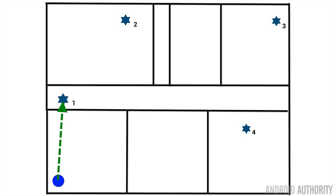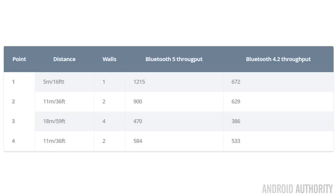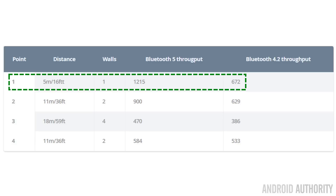As I moved the second board around the house, to point one — just through one wall about five meters away — the speeds did start to change. To compare, I also ran the same tests over the older stack. At point one, about five meters away (sixteen feet), Bluetooth 5 throughput dropped to 1.2 megabits per second, which is still very good. As a comparison, Bluetooth 4.2 was running at 672 kilobits per second — so really, that is roughly double.